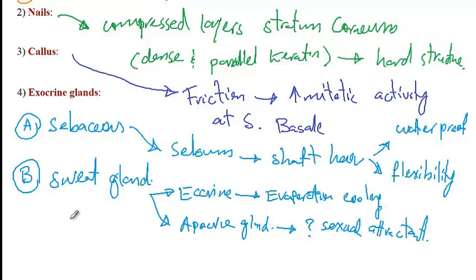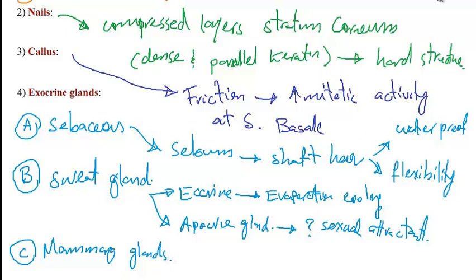Finally, we have mammary glands, located in the breast, whose function is to produce milk. The hormone prolactin induces the mammary glands to produce milk, while oxytocin induces secretion of milk by inducing contraction of the myoepithelial cells in the ducts of the mammary glands.